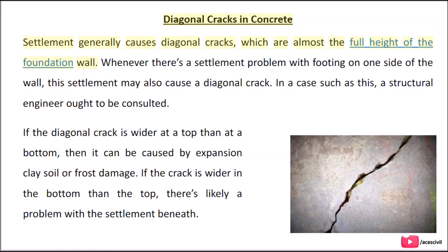Diagonal cracks in concrete: settlement generally causes diagonal cracks which are almost the full height of the foundation wall. Whenever there's a settlement problem with a footing on one side of the wall, this settlement may also cause a diagonal crack, and a structural engineer ought to be consulted. If the diagonal crack is wider at the top than at the bottom, it can be caused by expanding clay soil or frost damage. If the crack is wider at the bottom than the top, there's likely a problem with settlement beneath.